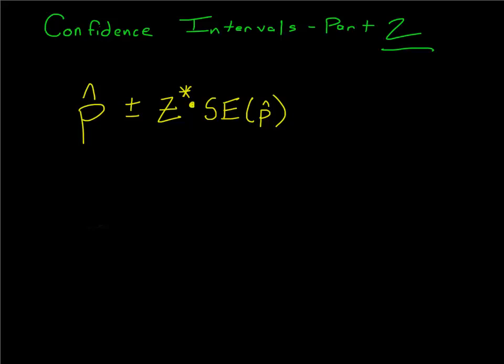Now that we understand confidence intervals, we understand that a confidence interval starts off with your sample proportion — what you saw in your sample. Then it adds or subtracts the margin of error. Error is not a bad thing; it just means how much we're off, because our sample isn't necessarily going to be the exact truth.